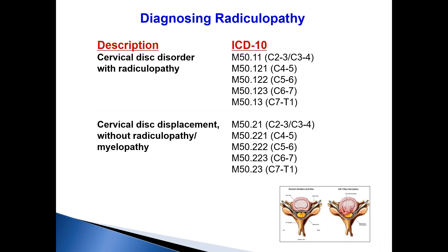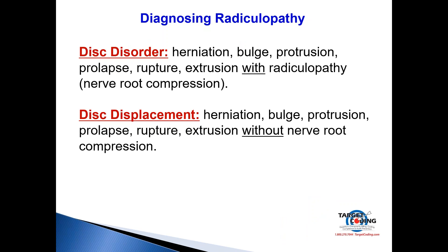Let's discuss the difference between disc disorder and disc displacement. Cervical disc disorders are the M50.1 series; cervical disc displacement without radiculopathy or myelopathy is the M50.2 series. A disc disorder involves disc pathology — bulge, protruded, ruptured, or extruded disc — with radiculopathy, meaning nerve root compression. A disc displacement involves disc pathology — herniated or bulging disc — but without any radiculopathy, meaning no nerve root compression.